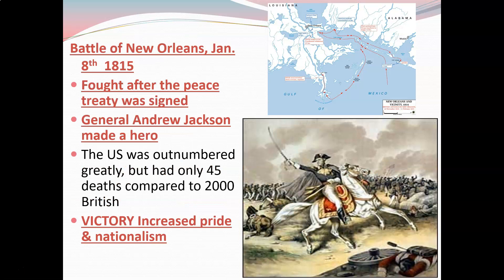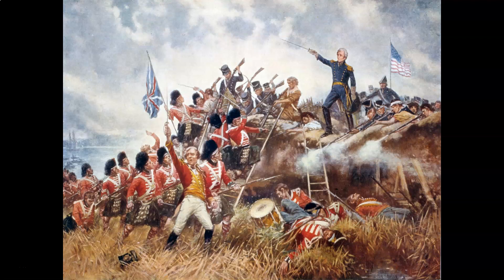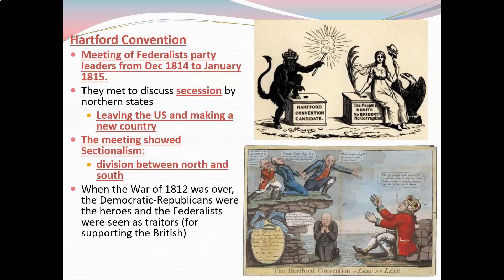January 8th, 1815 — almost two weeks after the armistice was signed on December 24th — Andrew Jackson led a group including Native Americans down to New Orleans to fight the British still stationed there. Andrew Jackson had been fighting against Native Americans but managed to convince them to help him fight in New Orleans. He was outnumbered greatly but had only 45 deaths, killing over 2,000 British troops. His great plan — setting up a parapet to protect his troops — made him a hero. This battle was fought before anyone knew about the peace treaty, and when the news hit America on January 9th, it looked like Andrew Jackson ended the War of 1812.